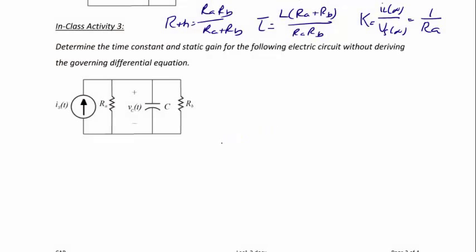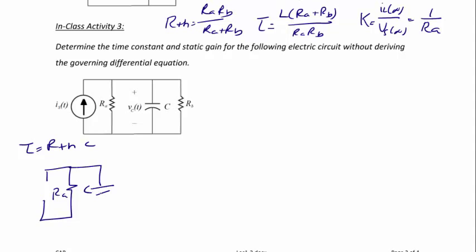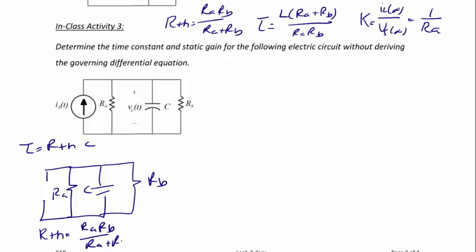Let's try another example — an RC circuit with a current source instead of a voltage source. We find tau first: tau equals R_Thevenin times C. To find R_Thevenin, we turn off the current source. We then have R_A in parallel with C in parallel with R_B. So R_Thevenin equals (R_A · R_B)/(R_A + R_B), and tau equals (R_A · R_B · C)/(R_A + R_B).